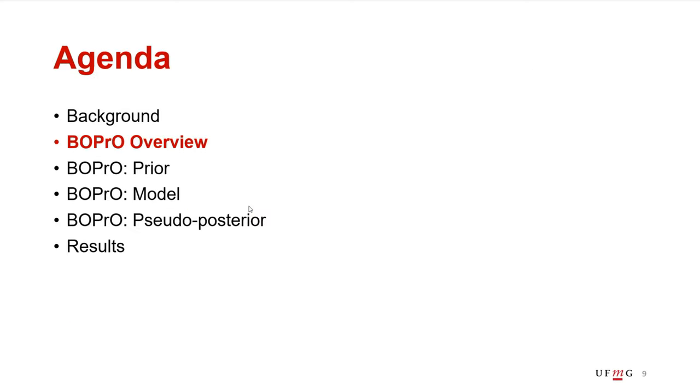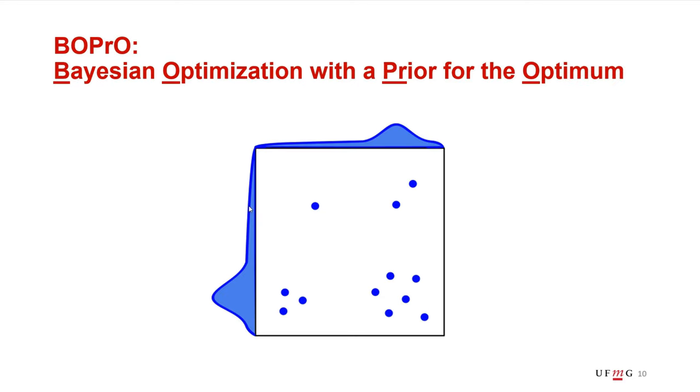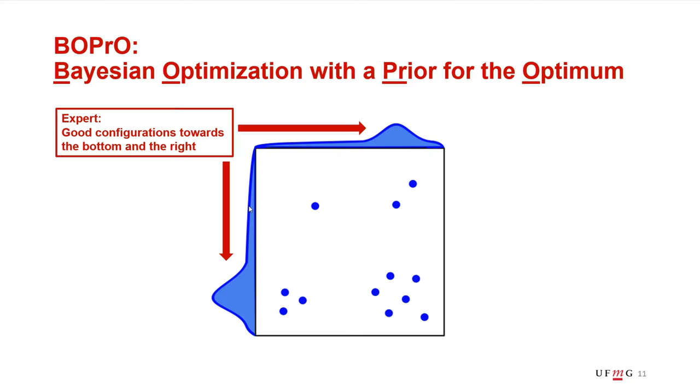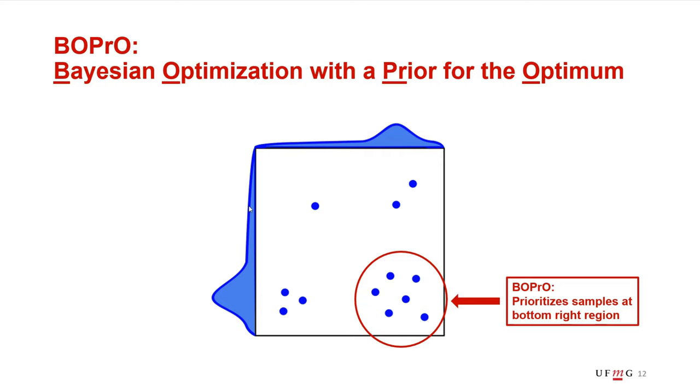To address this problem, we propose our solution that we call BOPrO, or Bayesian optimization with a prior for the optimum. BOPrO allows experts to inject their knowledge about their application in the form of a probability distribution of where in the space they expect to find the optimum. BOPrO then uses this information to try to guide the optimization towards these regions where experts expect to perform well and away from regions where the experts expect to perform poorly.